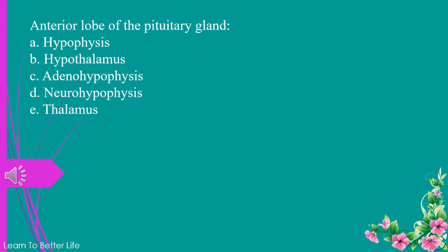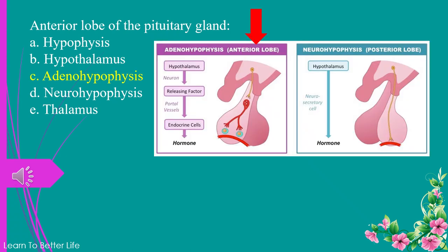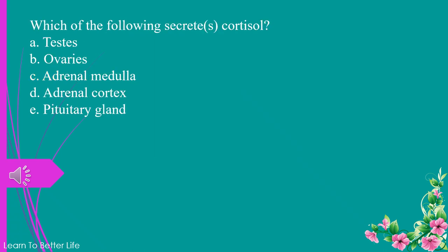Anterior lobe of the pituitary gland. a. hypophysis. b. hypothalamus. c. adenohypophysis. d. neurohypophysis. e. thalamus. The answer is c. adenohypophysis.